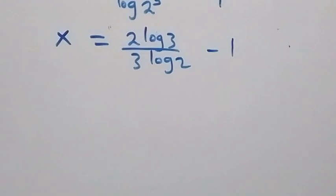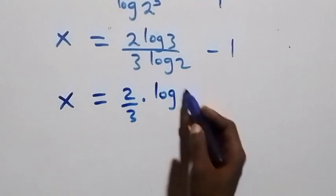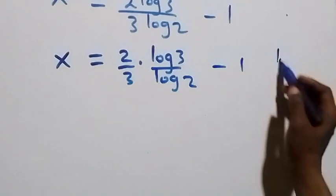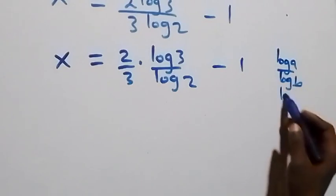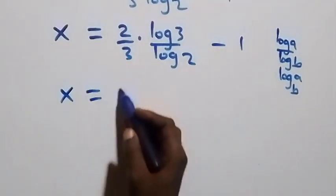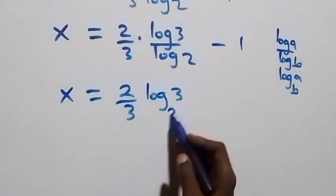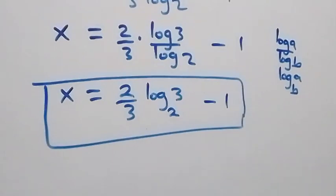We can separate this as x equals 2 over 3 times log 3 over log 2, minus 1. Then from the change of base formula, when we have log a over log b this can be written as log a to base b. So this becomes x equals 2 over 3 times log 3 to base 2, minus 1.